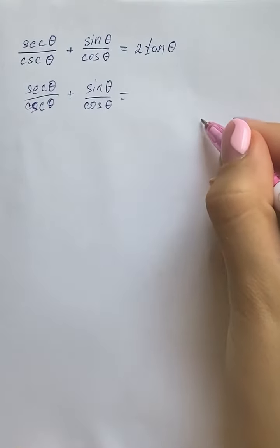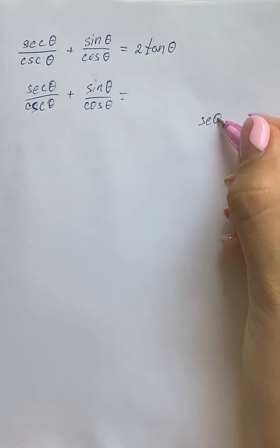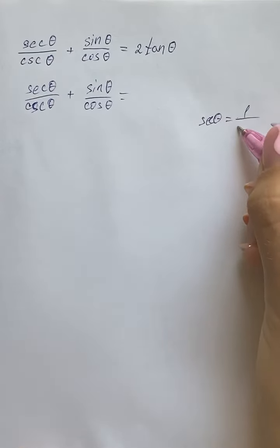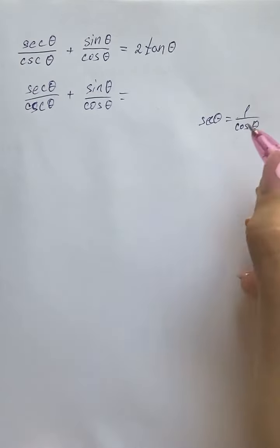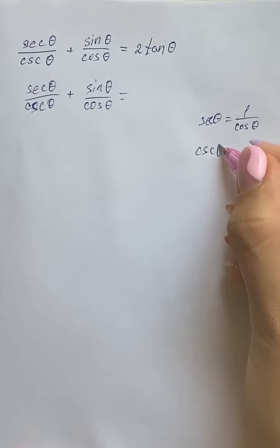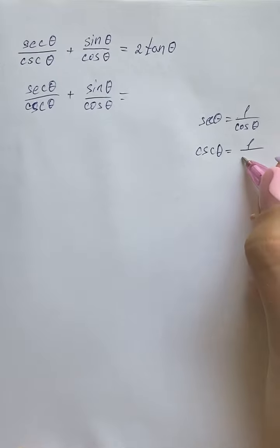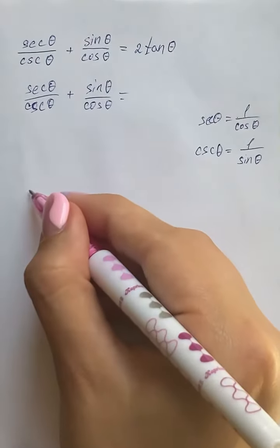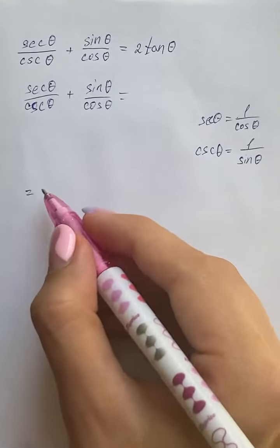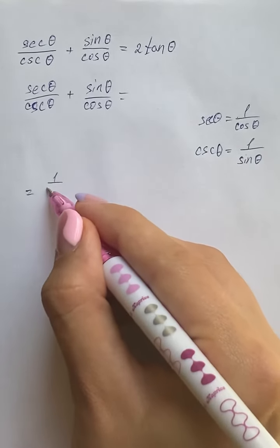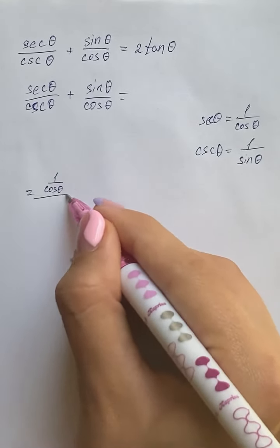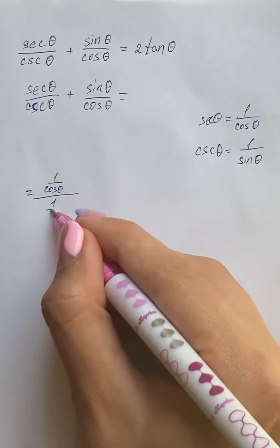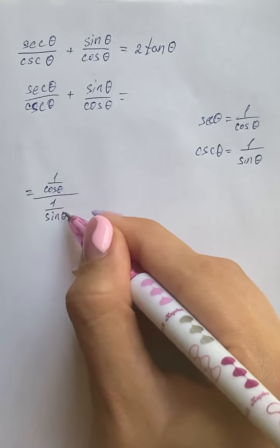Here we're going to use the trigonometric reciprocal identities: secant of theta equals 1 over cosine of theta, and cosecant of theta equals 1 over sine of theta. So we have 1 over cosine of theta, divided by 1 over sine of theta.